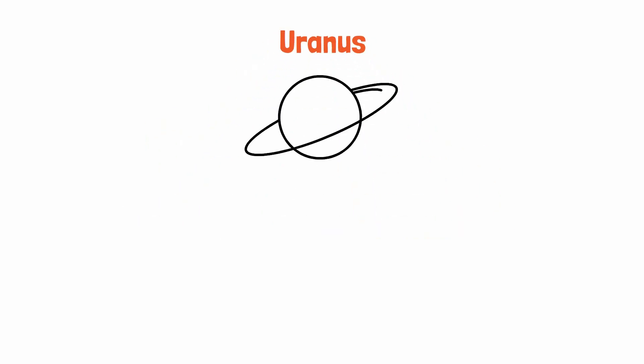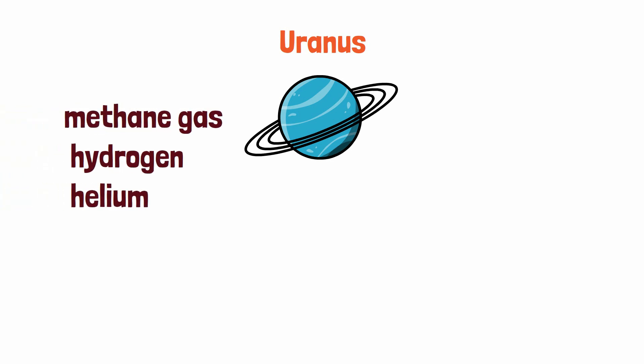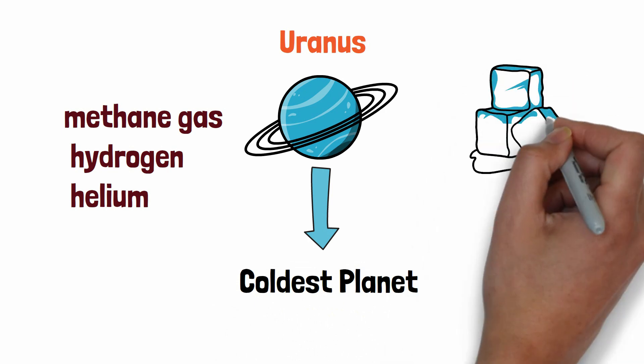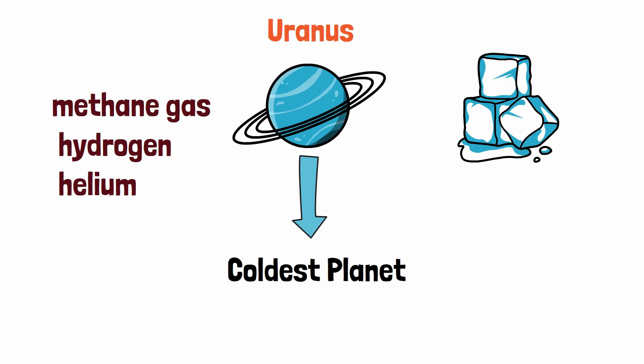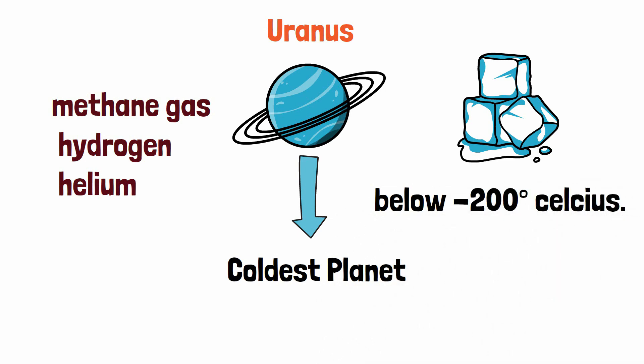Uranus has a greenish-blue appearance. It is due to the presence of methane gas in the atmosphere. However, the atmosphere is mainly made up of hydrogen and helium. Uranus is the coldest of all the planets as it has an icy layer of clouds around it. It might surprise you that the temperature of the cloud can get even below minus 200 degrees Celsius.